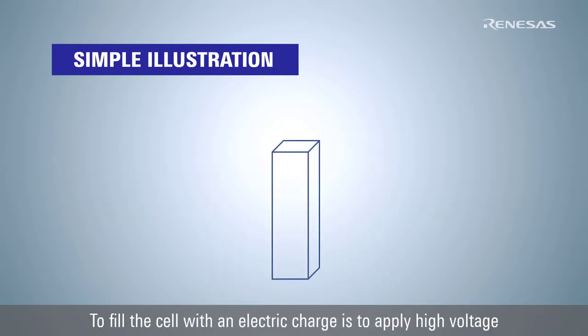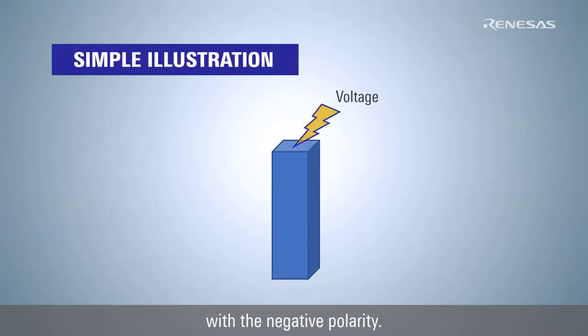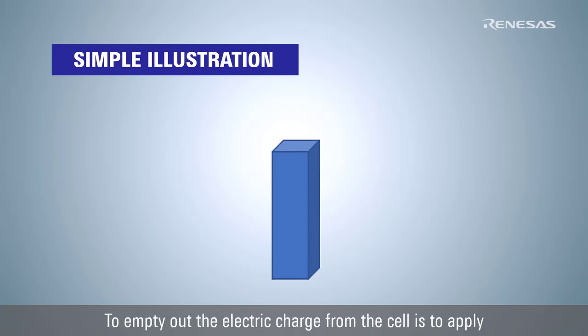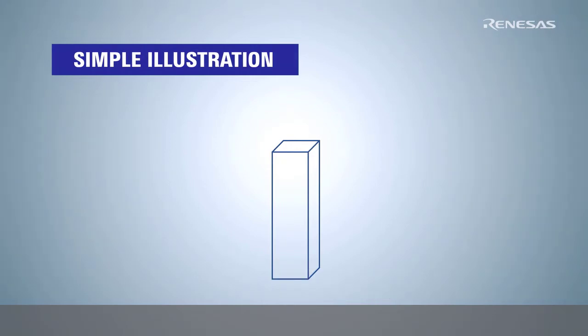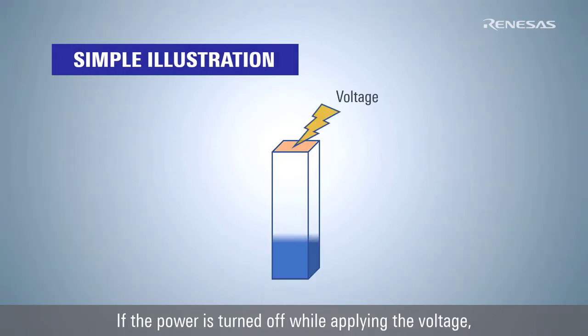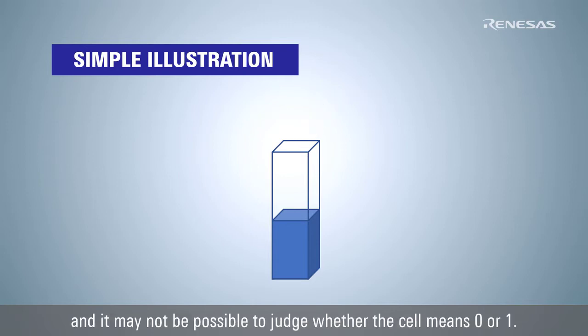To fill the cell with an electric charge is to apply high voltage on the upper side, so it can suck up the electric charge with the negative polarity. To empty out the electric charge from the cell is to apply high voltage on the lower side. If the power is turned off while applying the voltage, the electric charge in the cell will remain halfway, and it may not be possible to judge whether the cell means zero or one.